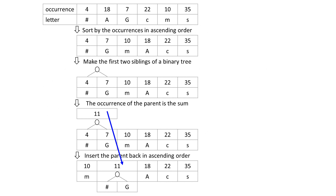Let's go through an example. Consider an article that has these characters: pound sign, A, G, C, M, and S. Their occurrences are 4, 18, 7, 22, 10, and 35 respectively. These characters are sorted by their occurrences in ascending order. Pound sign appears the least, only 4 times, and it is at the beginning. S appears the most, 35 times, and it is at the end.